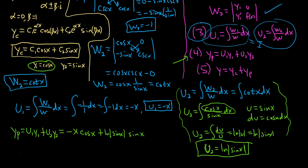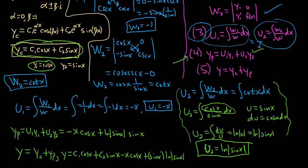So the final answer is YC plus YP. So let's write it. So Y equals, now we're done with that one, now we're in step five, YC plus YP. So I'm going to put a comment and write it again. So Y equals C1 cosine X. That's your YC. It's from up here. Plus C2 sine X minus X cosine X plus sine X times LN absolute value. And that should be the final answer to this problem.